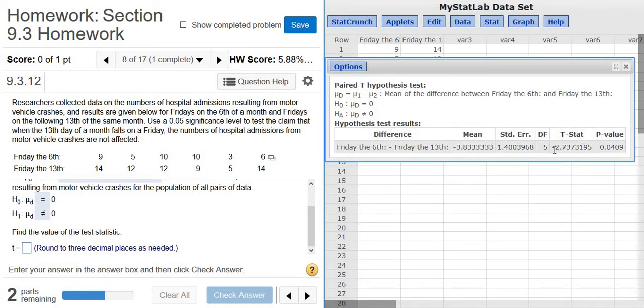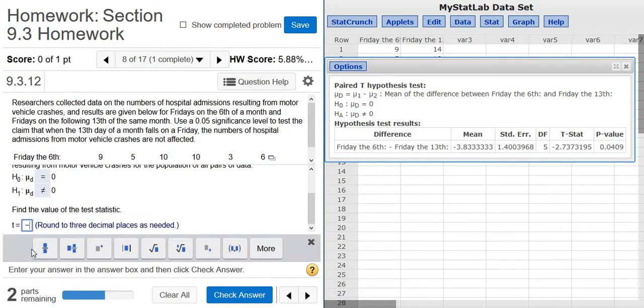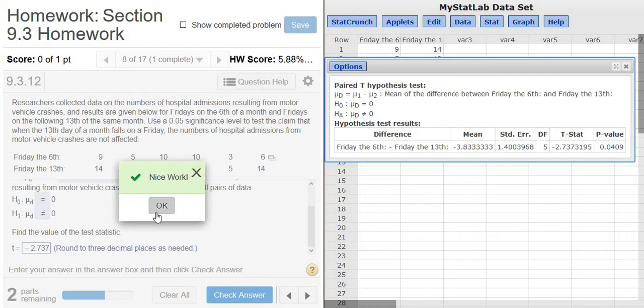And there is the test statistic. So negative, round to three decimals, negative 2.737. That should be right to three decimal places. Good stuff.